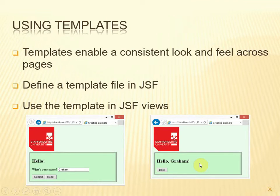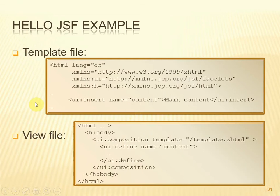What we need to do in our JSF application is to define a template file and then to use that template in the JSF views. This is done with three files — one for the template and one each for the two views. In the template file, the ellipsis indicates where we put all our code to show the template stuff — here we would have a university logo and the setting up of the box with the double border and green background.